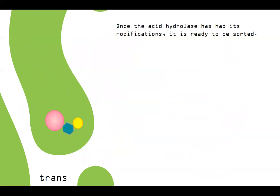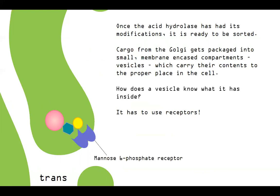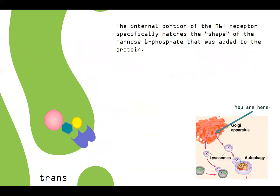Once the acid hydrolase has its modifications is ready to be sorted. So cargo from the Golgi gets packaged into again, those small membrane encased compartments vesicles, which are going to bud from the trans face and carry the contents to the proper place in the cell. But how does a vesicle know what it has inside it? How does it know once it's a bubble of membrane that what it has inside it needs to go to the lysosome? It has to use receptors. So protein receptors will be present for this. Here is the mannose six phosphate receptor.